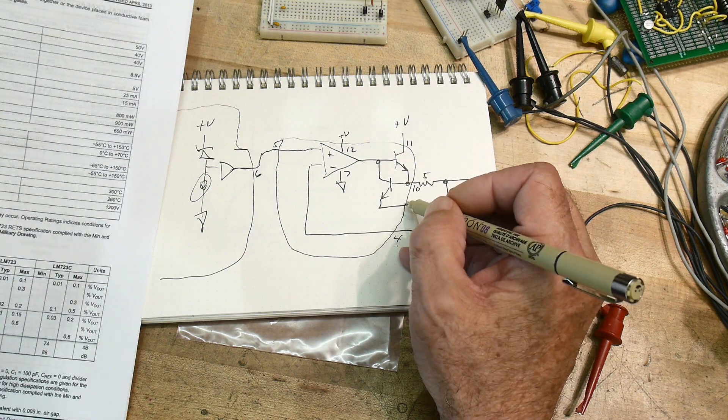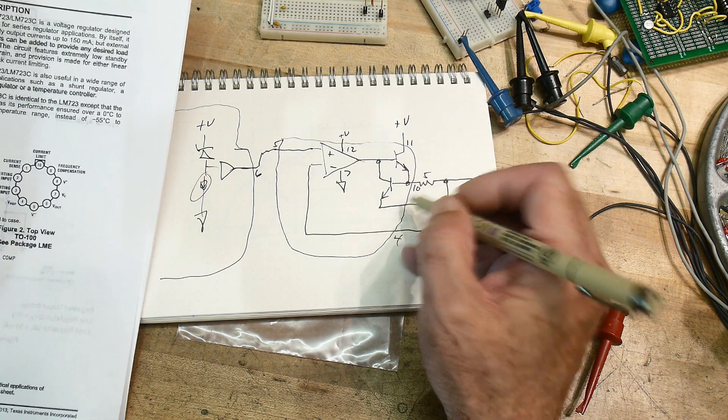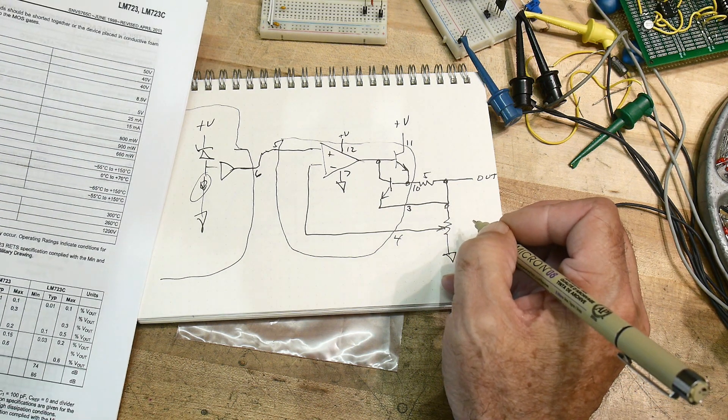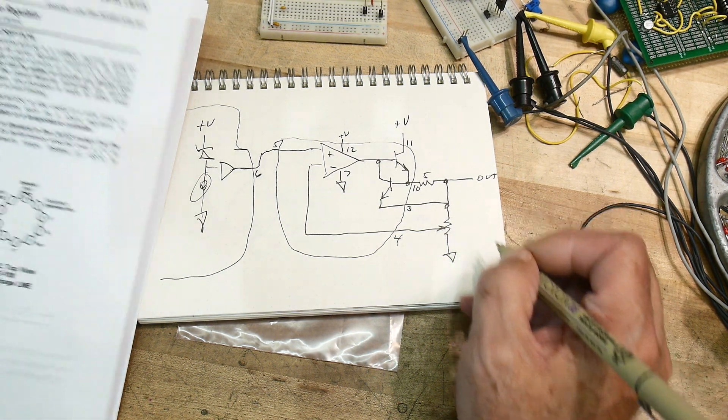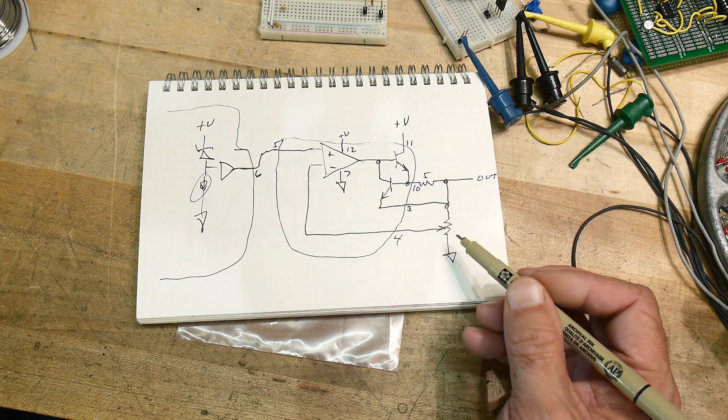This here is current sense, current sense is pin 3, and current limit pin 2, we're not going to use that. Okay so anyway, that's basically what's going on.